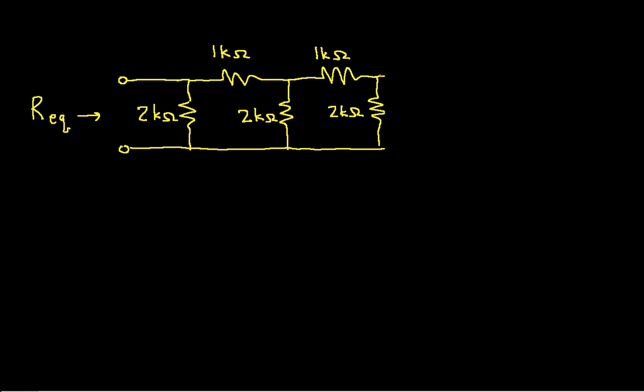Okay, so we have then our single 2k ohm resistor. Okay, so the next thing I want to do is, again, find either a series or parallel combination of resistors that I can come up with an equivalent resistor.